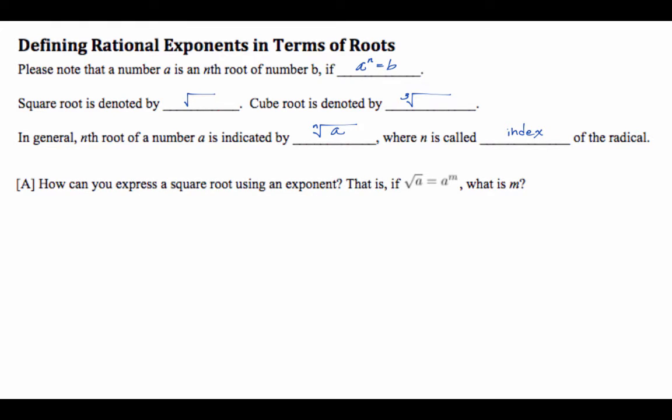So let's do a problem here. How can you express that square root using an exponent? How is the square root of a related to a to the m, and what is the value of m? This is a derivation of the generalization that we're going to do in a little while. So that's equal to each other, right?